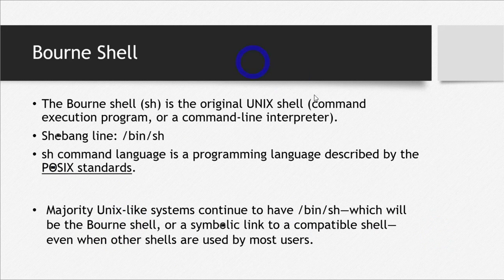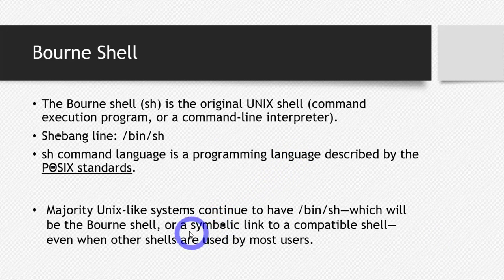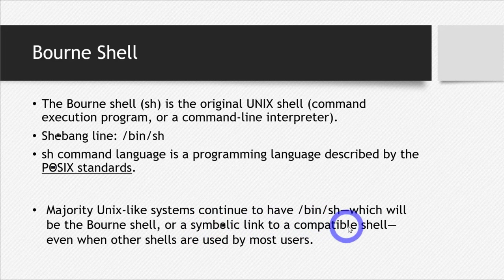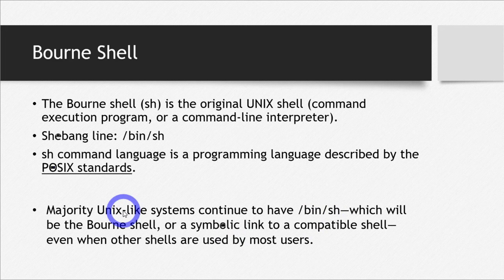I used some terminology you may not be familiar with — one of them was symbolic link. A symbolic link means a reference to any other file, or a path to any other file. So by that line, we mean the path to any other compatible shell. What we meant by the whole thing was: SH will continue to exist in Unix-like systems in the form of either born shell or any other born-compatible shell.